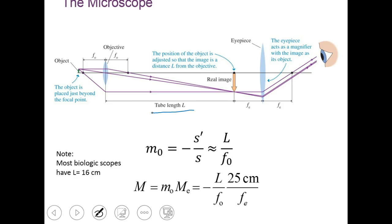I want you to take time in your notes to go ahead and draw this out and label the variables and write your equations. So L is the length of the tube. The longer the tube is for a microscope, generally, the more powerful that it is. For most biologic microscopes, L is going to be 16 centimeters. That's right where it falls.